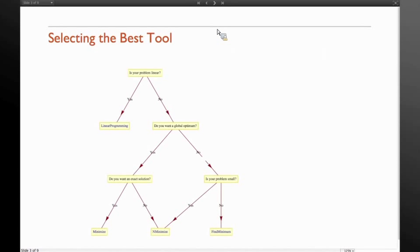And also I should mention that each of these optimization tools has a twin function. FindMinimum has a twin function FindMaximum, or NMinimize has a twin function, and Minimize has NMaximize. So they basically do the same thing.